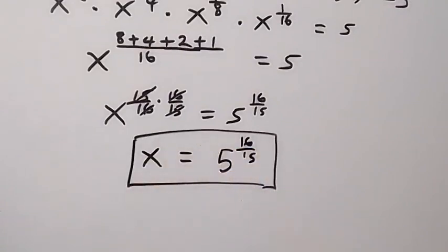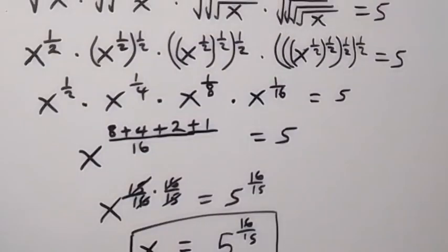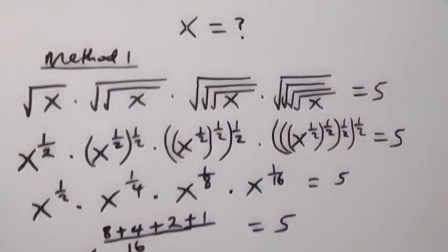From here we raise both sides to the reciprocal power, which is 16 over 15, such that the powers cancel out and we are left with x equals 5 raised to power 16 over 15 — the same answer as from the first method. Thank you for watching. Don't forget to subscribe for more exciting videos, turn on the notification bell, share this video, and give it a thumbs up. See you next class!